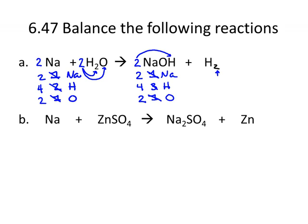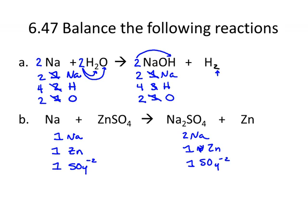The second reaction: I have one sodium, one zinc, and I'm going to balance sulfates because I see a sulfate on the reactant side and on the product side. So I have one SO4 on the reactant side and two on the product side. On the product side, I have two sodiums, one zinc, and one sulfate. Sodiums are not balanced, but this is actually an easy one — I just need to put a two in front of the sodium, and everybody else is balanced.